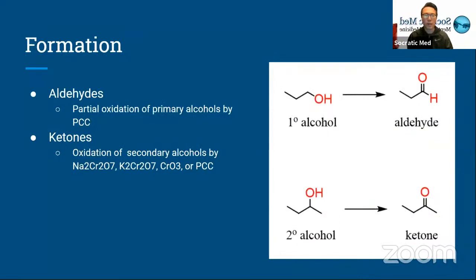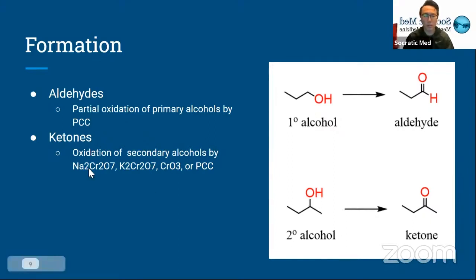You can form an aldehyde by partial oxidation of a primary alcohol using PCC. PCC is a mild oxidizing agent, so it won't oxidize the primary alcohol all the way to a carboxylic acid — it'll stop halfway and oxidize it to an aldehyde. For ketones, any oxidizing agent will oxidize a secondary alcohol into a ketone — PCC, Na₂Cr₂O₇, potassium dichromate, or the Jones oxidation will all convert a secondary alcohol into a ketone.